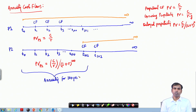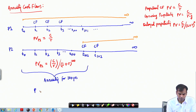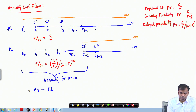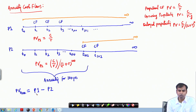When you try to understand the nature of cash flows for the first 100 years, the present value of annuity will be the present value of P1 minus the present value of P2.